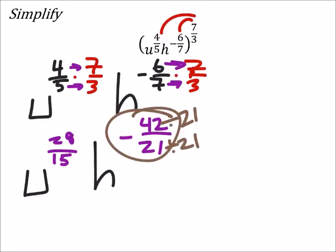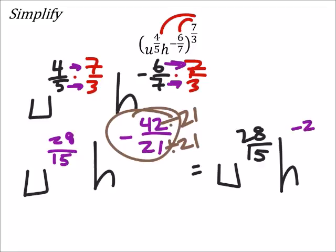So we end up with u to the power of 28 over 15 times h to the power of negative 2. Just to be on the safe side, I'm going to write this using only positive exponents. So I'd get u to the power of 28 fifteenths all over h to the power of 2.